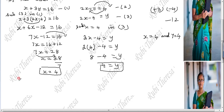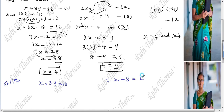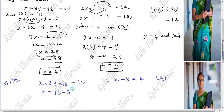Alternate method: X plus 3Y equal to 16 and 2X minus Y equal to 4. We choose to take X from the first equation because the coefficient of X is 1 there. So X equal to 16 minus 3Y. This gives us the value of X in terms of Y.